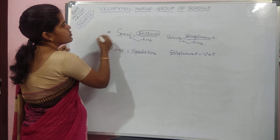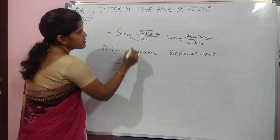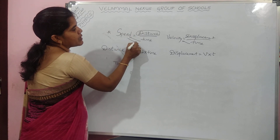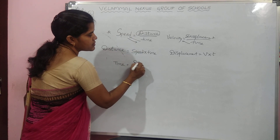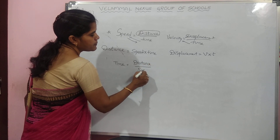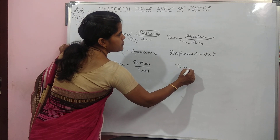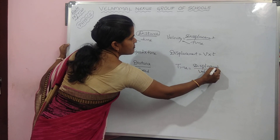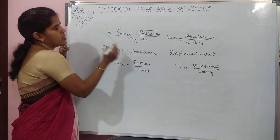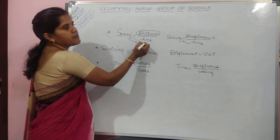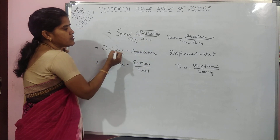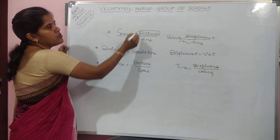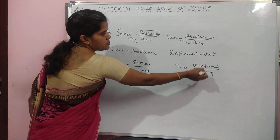Now from the same formula, suppose you want time. Time will be going this side, speed will be coming this side. So time is equal to distance by speed. Here also, time is equal to displacement by velocity. To summarize: speed equals distance by time, velocity equals displacement by time, distance equals speed into time, displacement equals velocity into time, time equals distance by speed, time equals displacement by velocity.